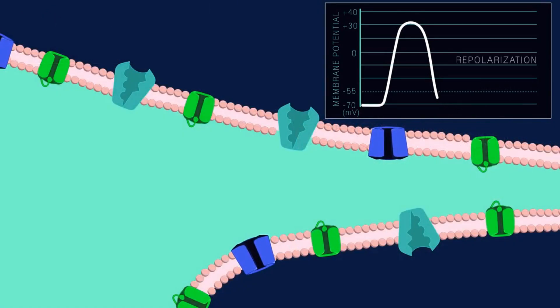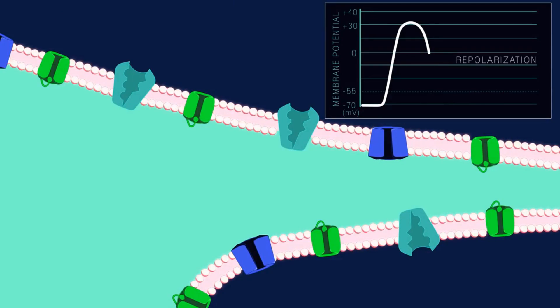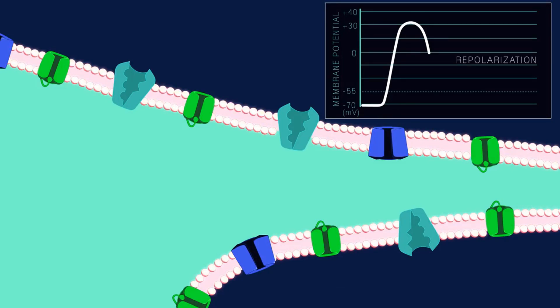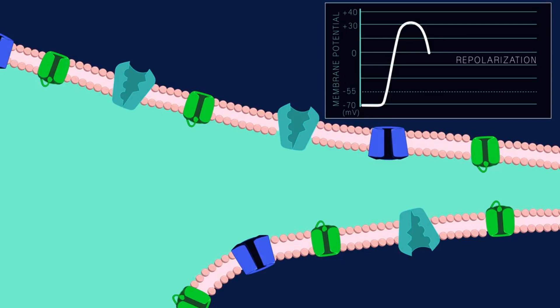During repolarization, the inactivated sodium channels won't respond to any stimulus at all. During this time, the neuron is in its absolute refractory period — the period of time when a nerve cannot fire another action potential no matter how strongly it is stimulated. The absolute refractory period prevents action potentials from happening again too quickly and prevents the action potential from traveling backwards along the axon.